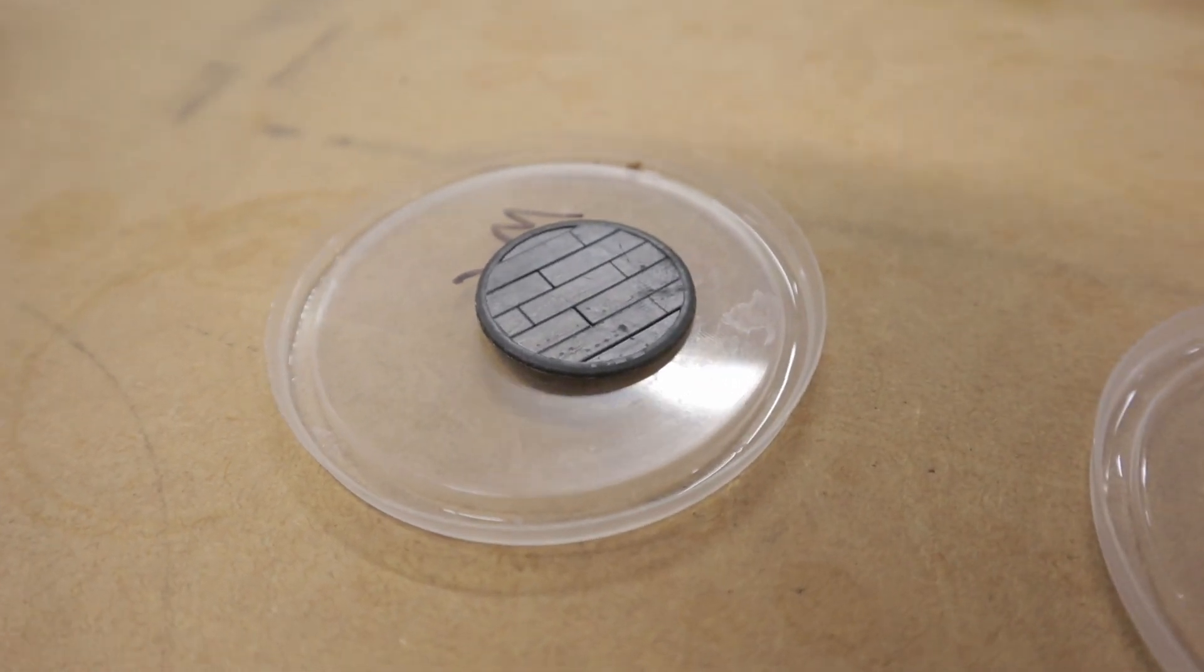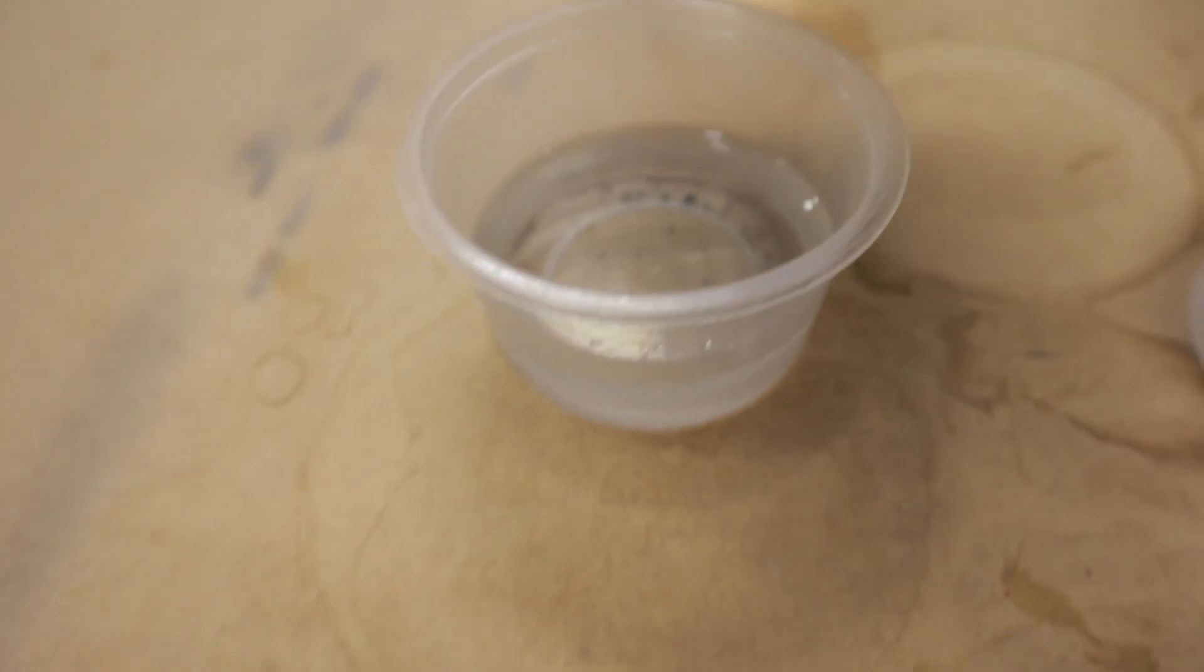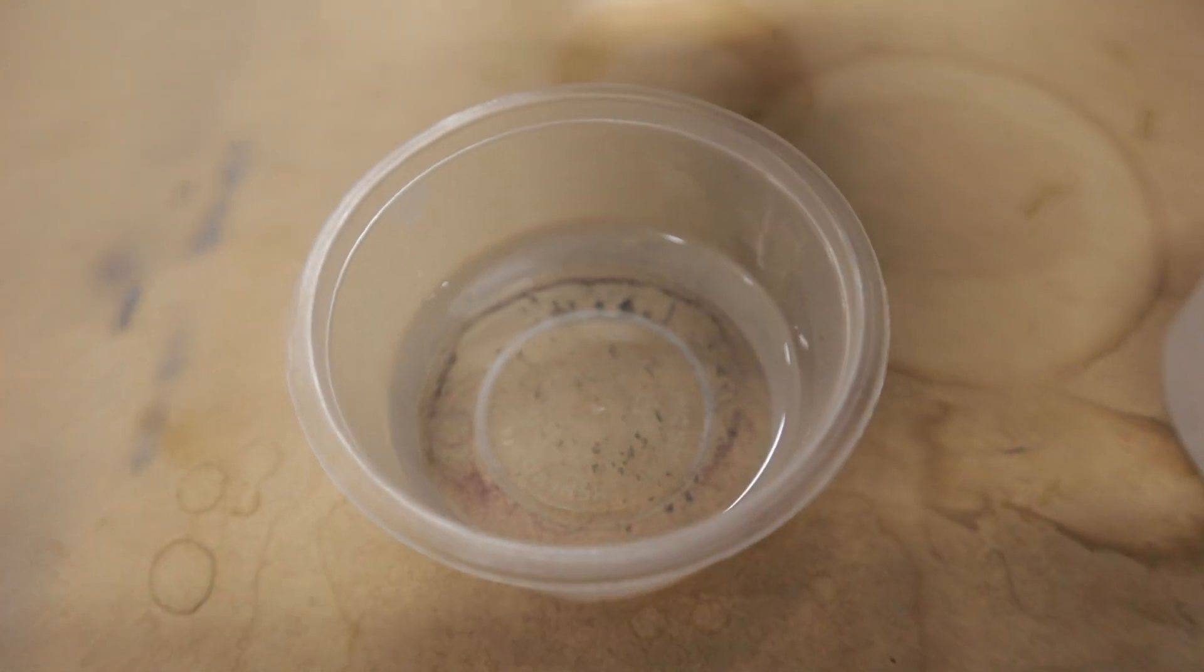Starting first with Methylated Spirits, I think it did a great job, because I can't seem to find any residue left on the print. And looking at the solution, looks like a good amount of the resin has been removed.